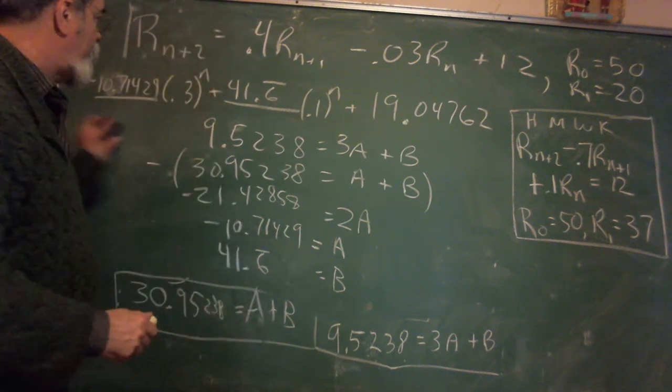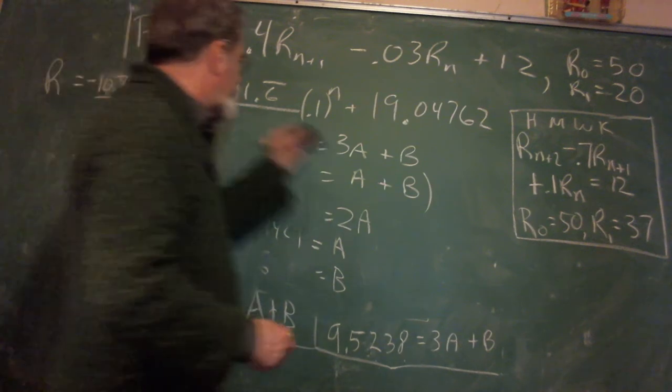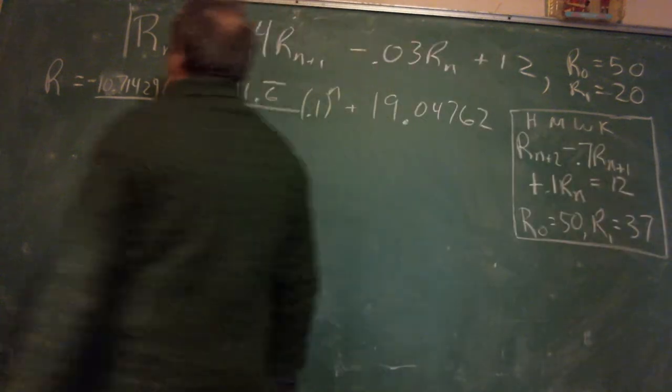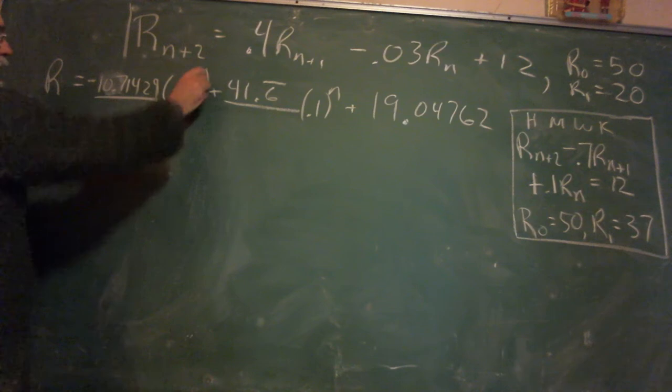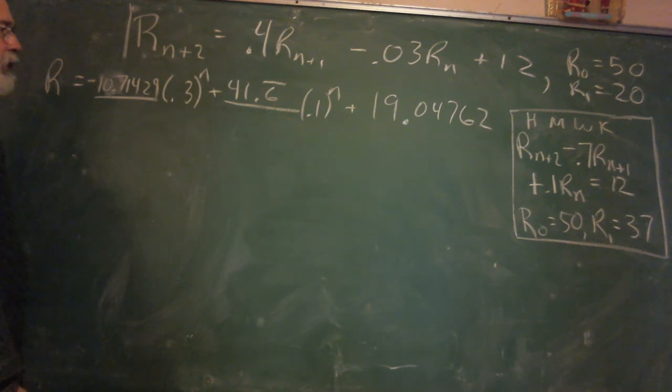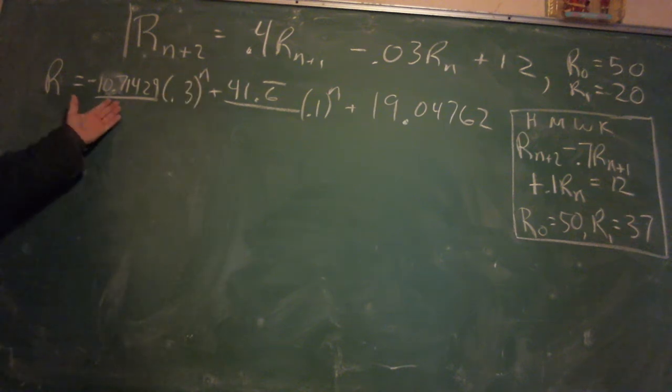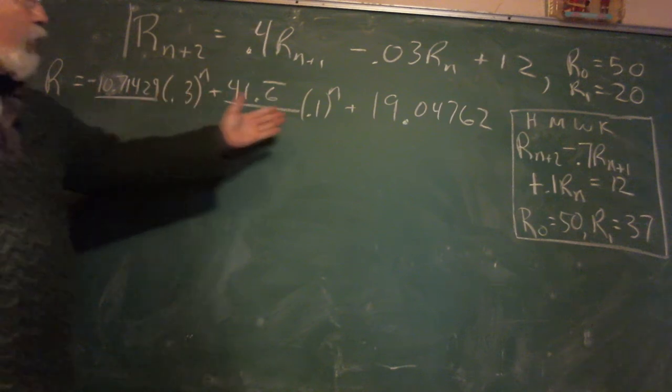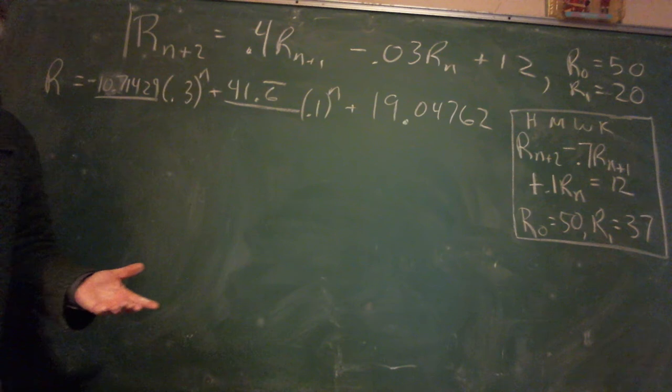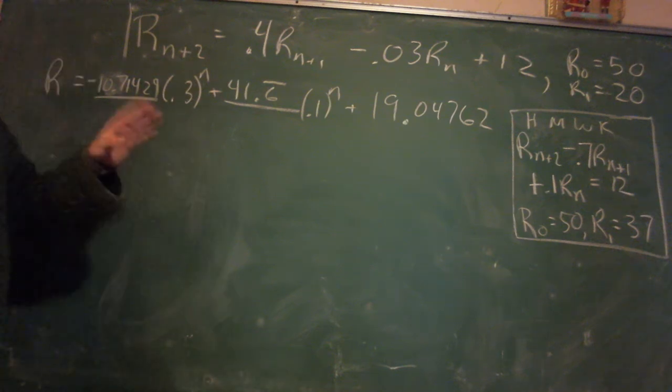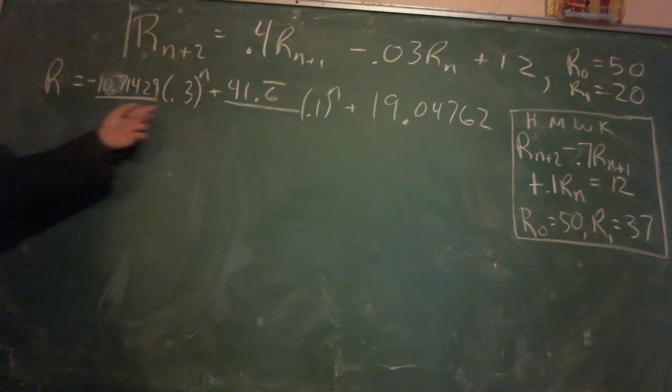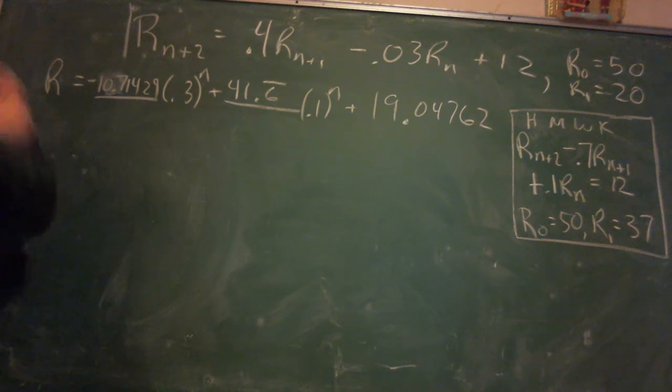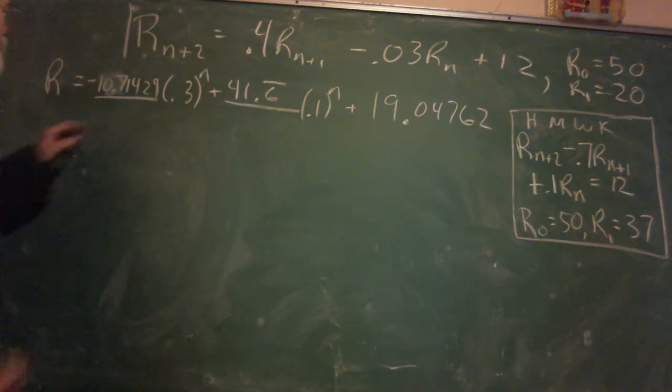Now, what do we do with this thing? We check. We check because we are mighty good mathematicians. Now, how do you check? Well, you take two derivatives and put it into the original differential equation. But wait a second. We have a difference equation. So we have this is R for any N. I can let N be whatever I want it to be. So when I have N equals 0, I have minus 10.71 plus 41.6 bar plus 19. If you do the math, it comes out to be like 50.0004 or something like that. Then we've got to check the second initial condition, which is a 0.3 times this, a 0.1 times this, and add the 19. And it comes out to be very close to 20. You can check those yourself. But how do we check it in the difference equation?